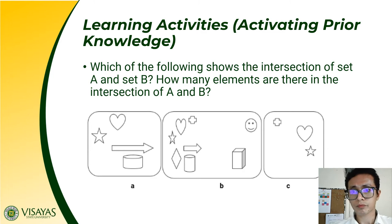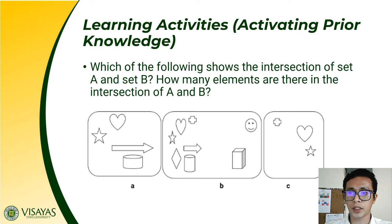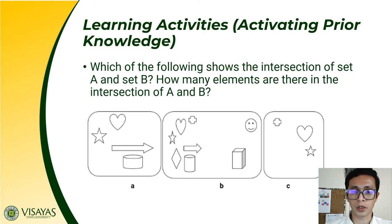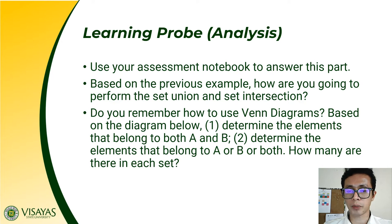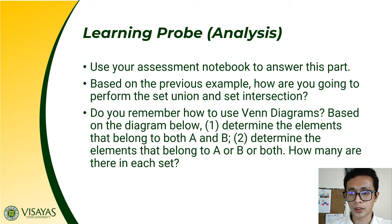The second question: which of the following shows the intersection of set A and set B? How many elements are there in the intersection of set A and set B? Take a picture of this question so you will have something to share during our group activity. Based on the previous example, how are you going to perform set union and set intersection?